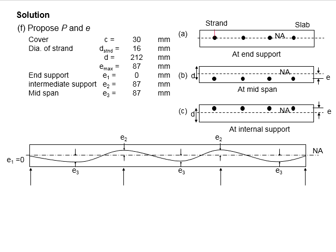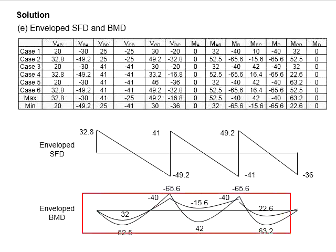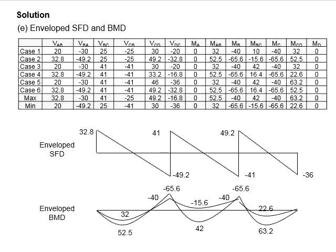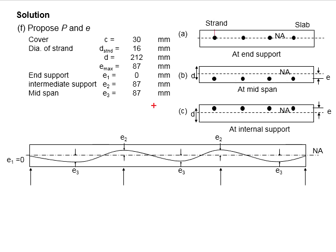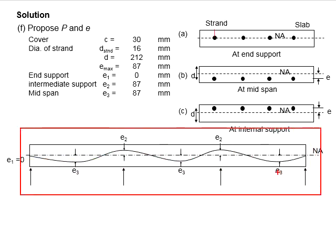Next is to propose the P and E for load balancing purposes. Based on the shape of the bending moment diagram, where there are moments at the mid-span and negative moments at the interior support, this tendon profile is being proposed.